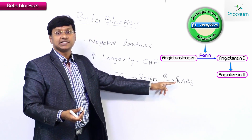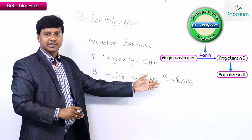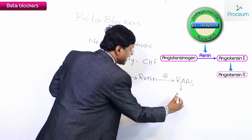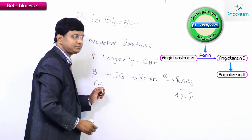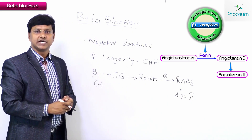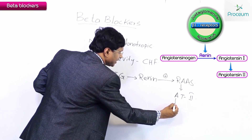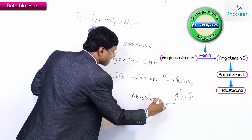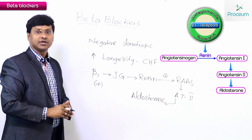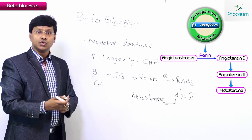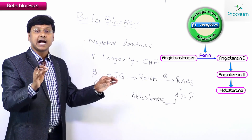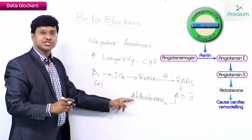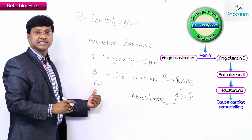The product of the renin-angiotensin-aldosterone system includes angiotensin 2. This angiotensin 2 will cause aldosterone release, and this aldosterone will then cause cardiac remodeling. So the aldosterone being produced is due to stimulation of the beta 1 receptors.